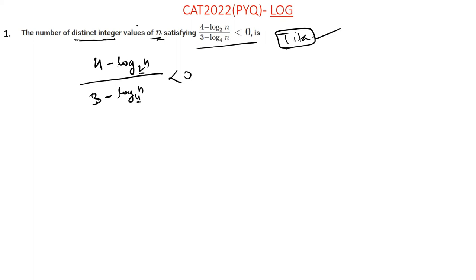Log into the base 2, variable, variable x. Calculation easy. 3 minus 1 by 2 log into the base 2. Okay, assume x to the base 2, x less than 0.